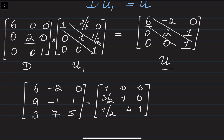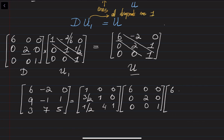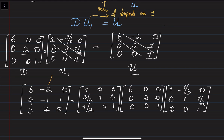Instead of writing down U directly, I write D times U1. The diagonal matrix D is: six, zero, zero; zero, two, zero; zero, zero, one. And this is multiplied by U1: one, minus one over three, zero; zero, one, one over two; zero, zero, one. So we wrote down the matrix A as the multiplication L times D times U1, where all diagonal entries of L equal one and all diagonal entries of U1 equal one.